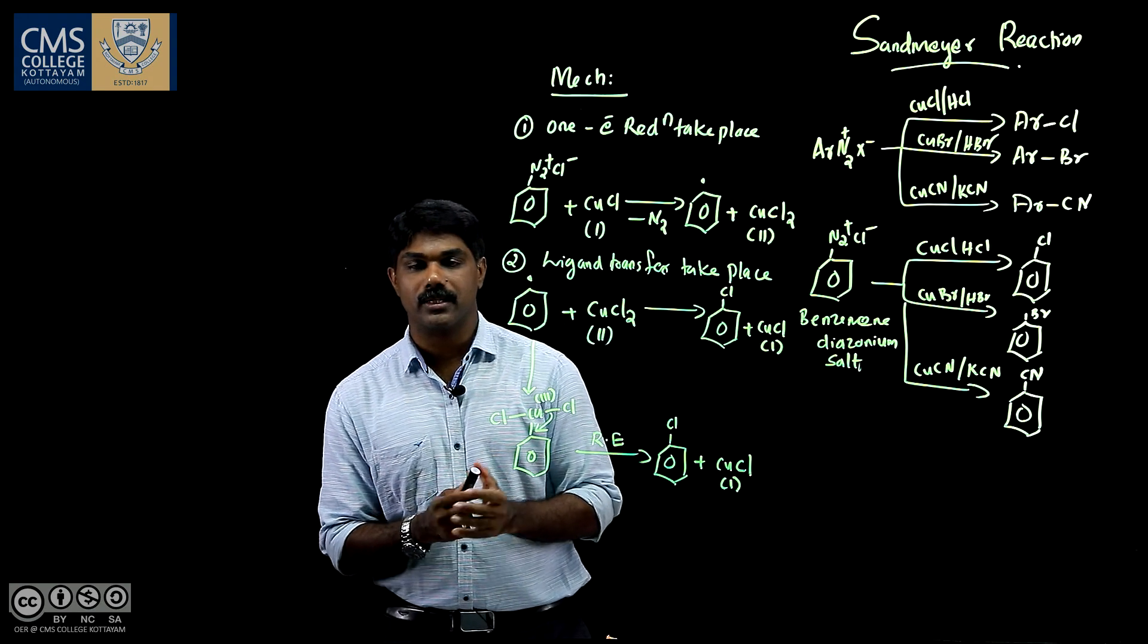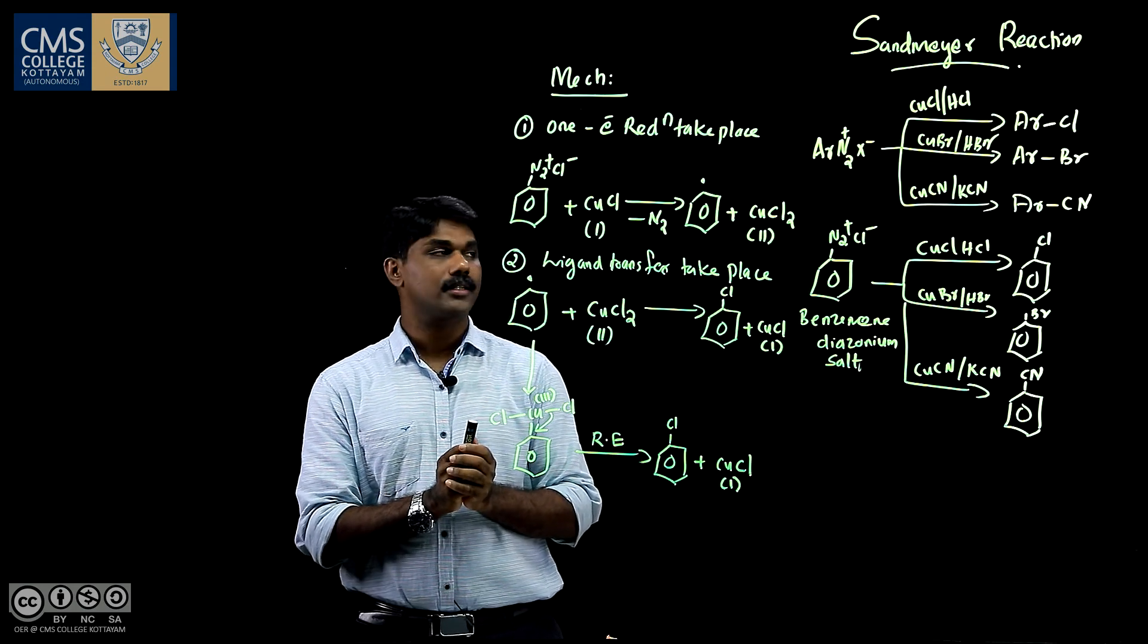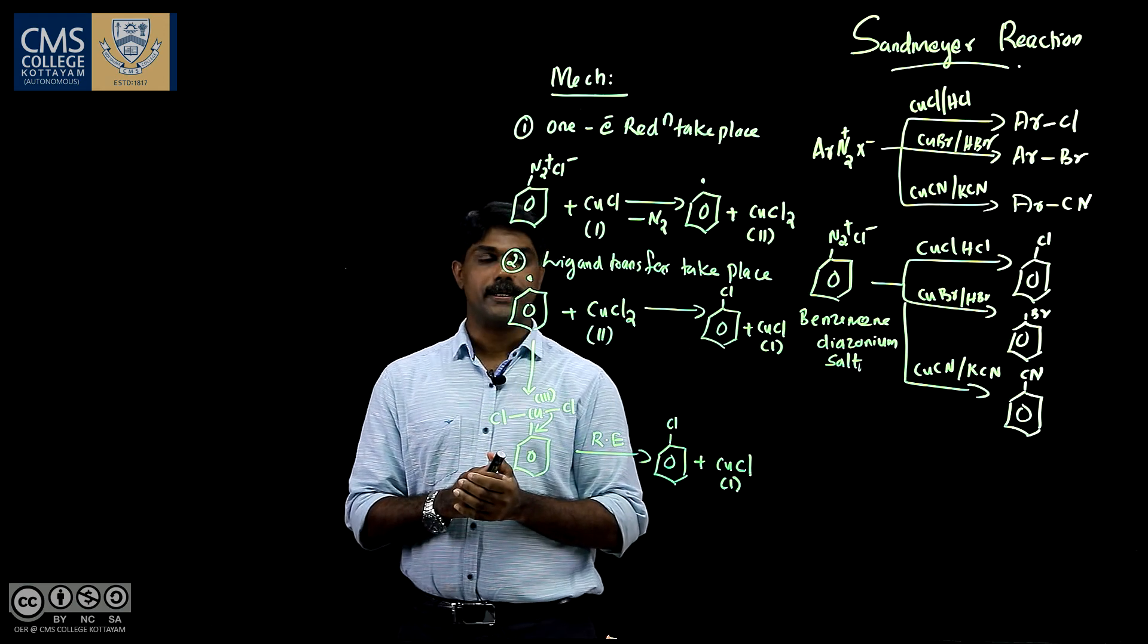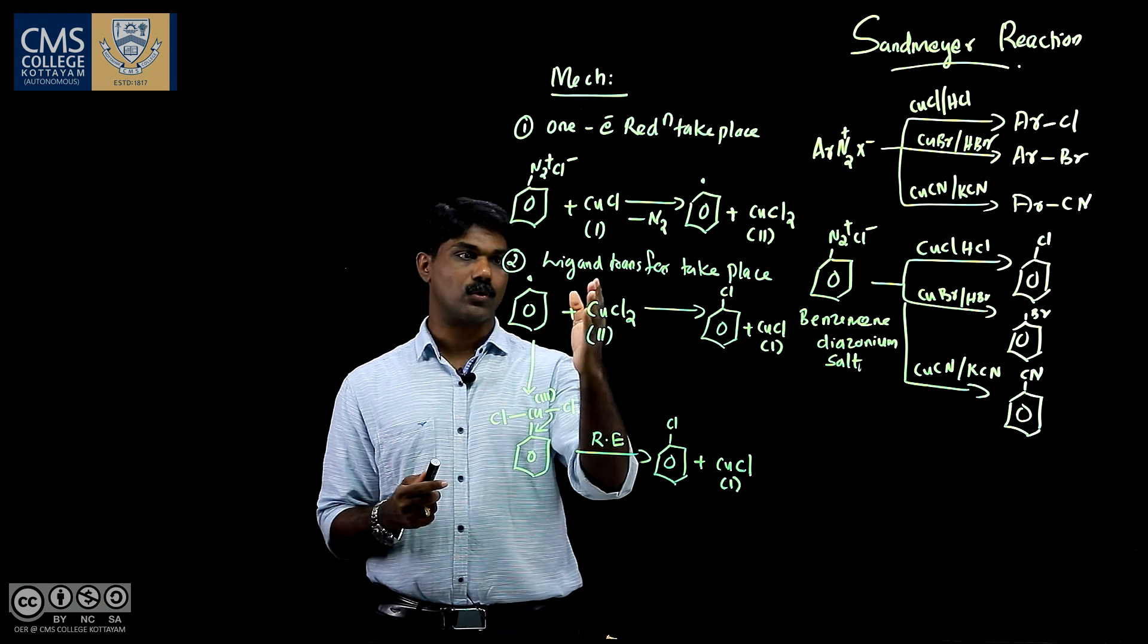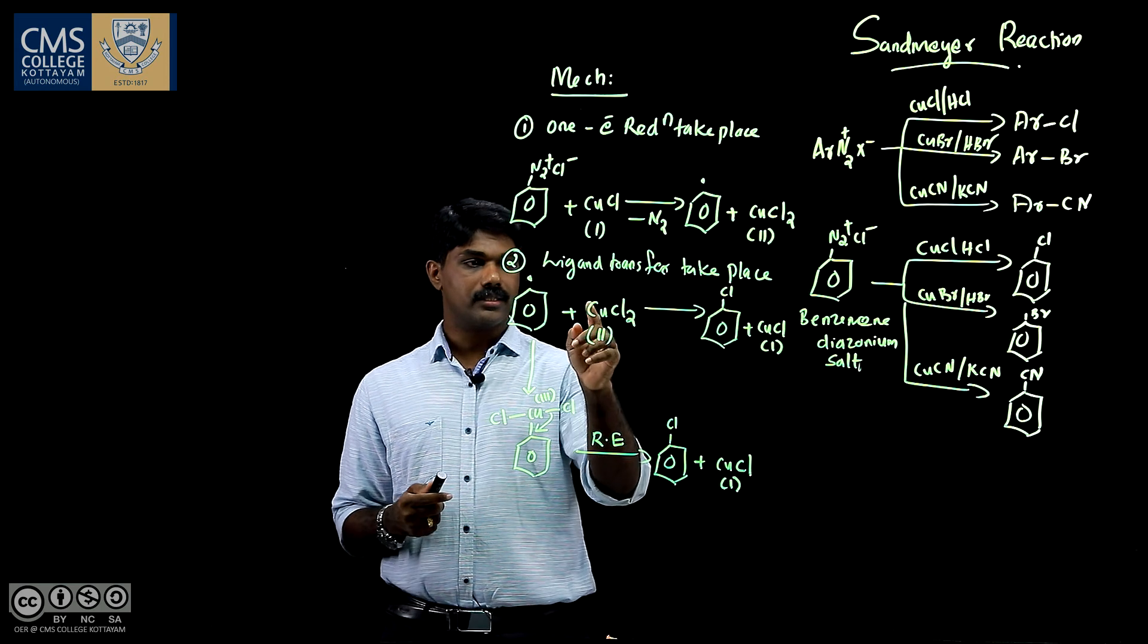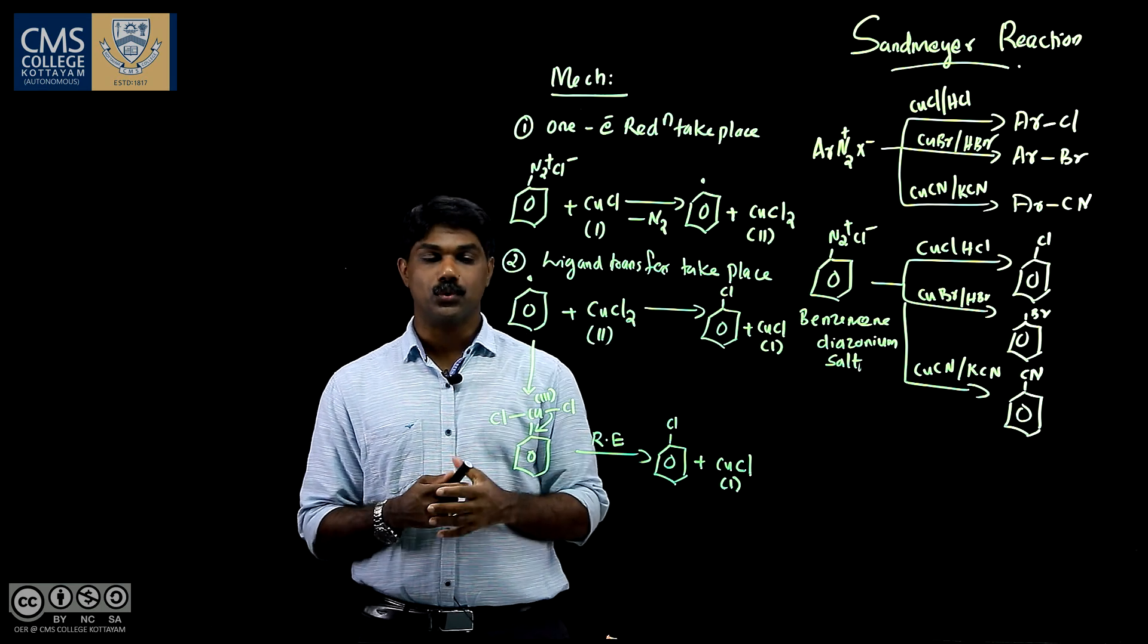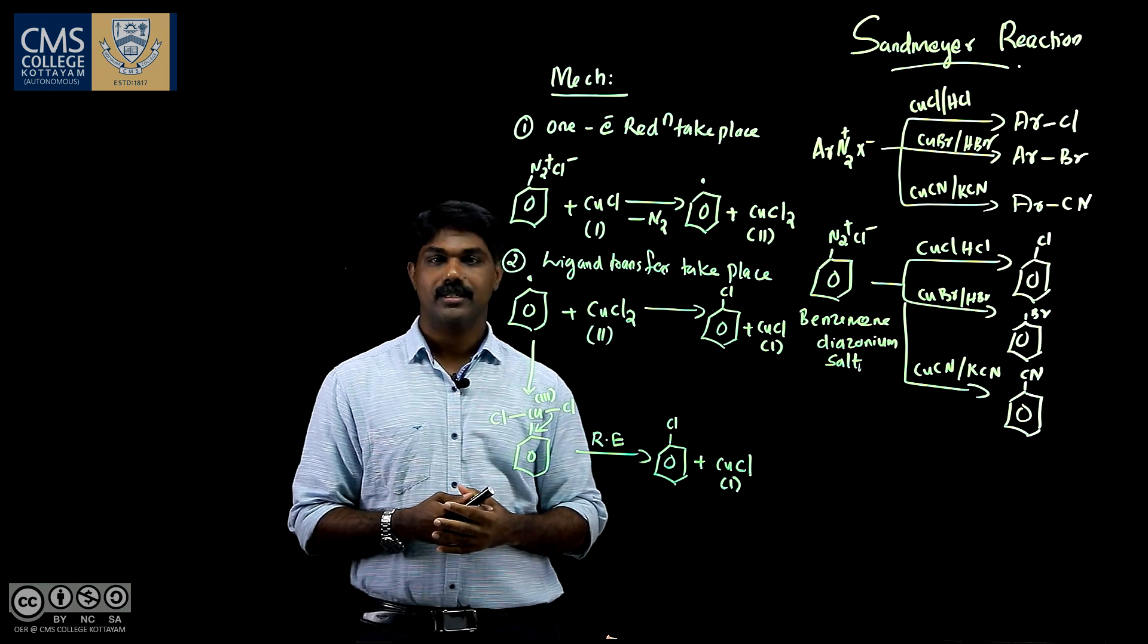So, arine diazonium salts are converted into various commercially important products like chlorobenzene, bromobenzene, etc. by a 1-electron reduction process followed by a ligand transfer reaction. And this ligand transfer reaction can take place in 2 ways. And this is the reductive elimination pathway. Thank you.